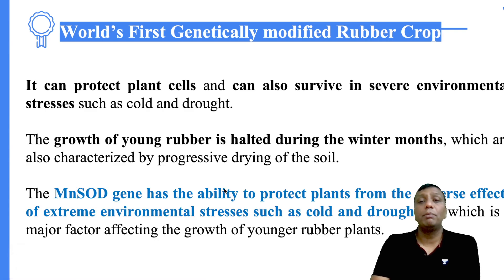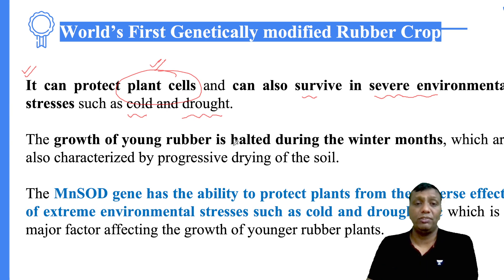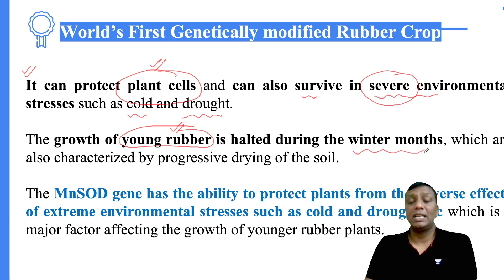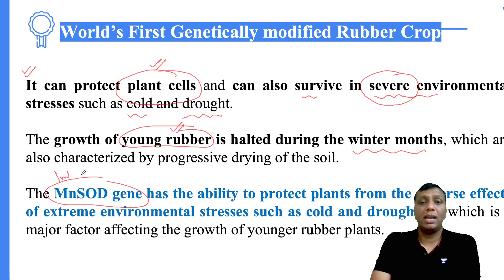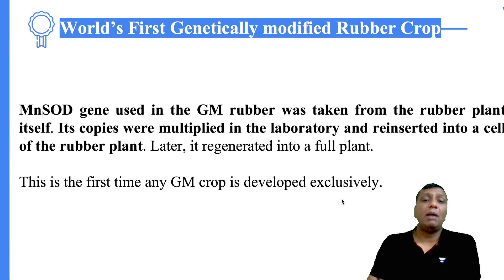Through the help of the MnSOD enzyme, our purpose is to protect the plant cells against severe environmental conditions — specifically cold and drought stress. MnSOD is the enzyme generated by the MnSOD gene, and it saves the plant against cold and drought situations. In the young stage of the rubber plant, severe winter conditions are especially dangerous, but with sufficient MnSOD enzyme, the young rubber plant is kept safe against adverse extreme environmental stress.